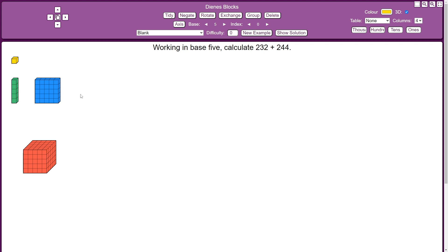So I've got 2, 3, 2. That's two groups of 5 5s, rather than your normal 100s. Three groups of 5, rather than your normal 10s. And then two units. And they're never going to change, no matter what base you're using.